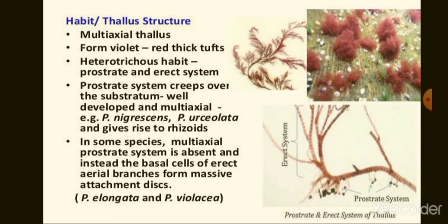The prostrate part of the thallus is attached to the substratum with septated rhizoids. These rhizoids sometimes form an attachment disc to anchor to the substratum. The erect or upright system is laterally or dichotomously branched.